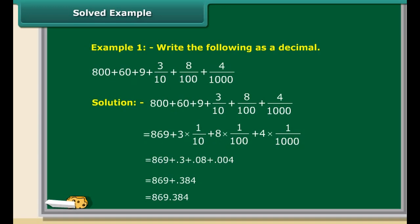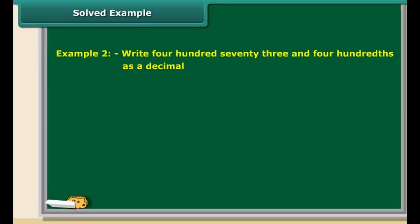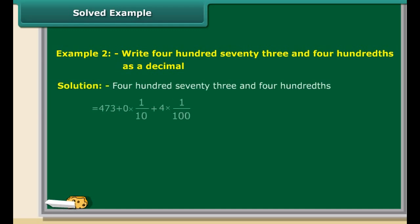Let us solve one more question. Write 473 and 4/100 as a decimal. In this number, 473 is the whole part. The decimal part is 4/100, which can be written as 0.04. So the number is 473.04.